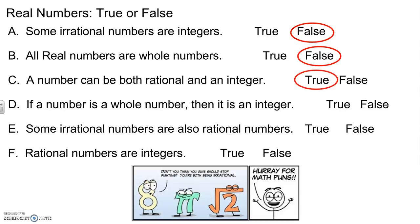A number can be both rational and an integer. True, because some integers can be simplified down so if I have 6 over 3 that equals 2 so that's an integer so I go from rational to an integer. If a number is a whole number then it's an integer. True again, integers are positive and negative whole numbers so a whole number would be an integer.